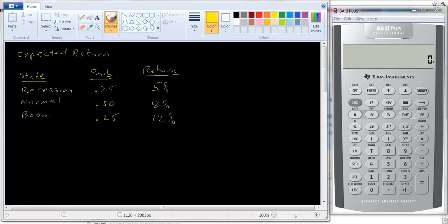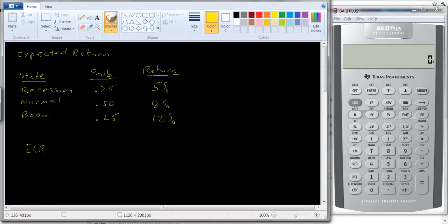You can't just add these numbers up and divide by three because you'd be giving too much weight to the recession and the boom period and not enough weight to the normal growth. So expected return here is just going to be calculated as this weighted average. Let's use a summation sign. It's going to be i equals 1 to n, where n are the number of states of the world. In this case we have 3.